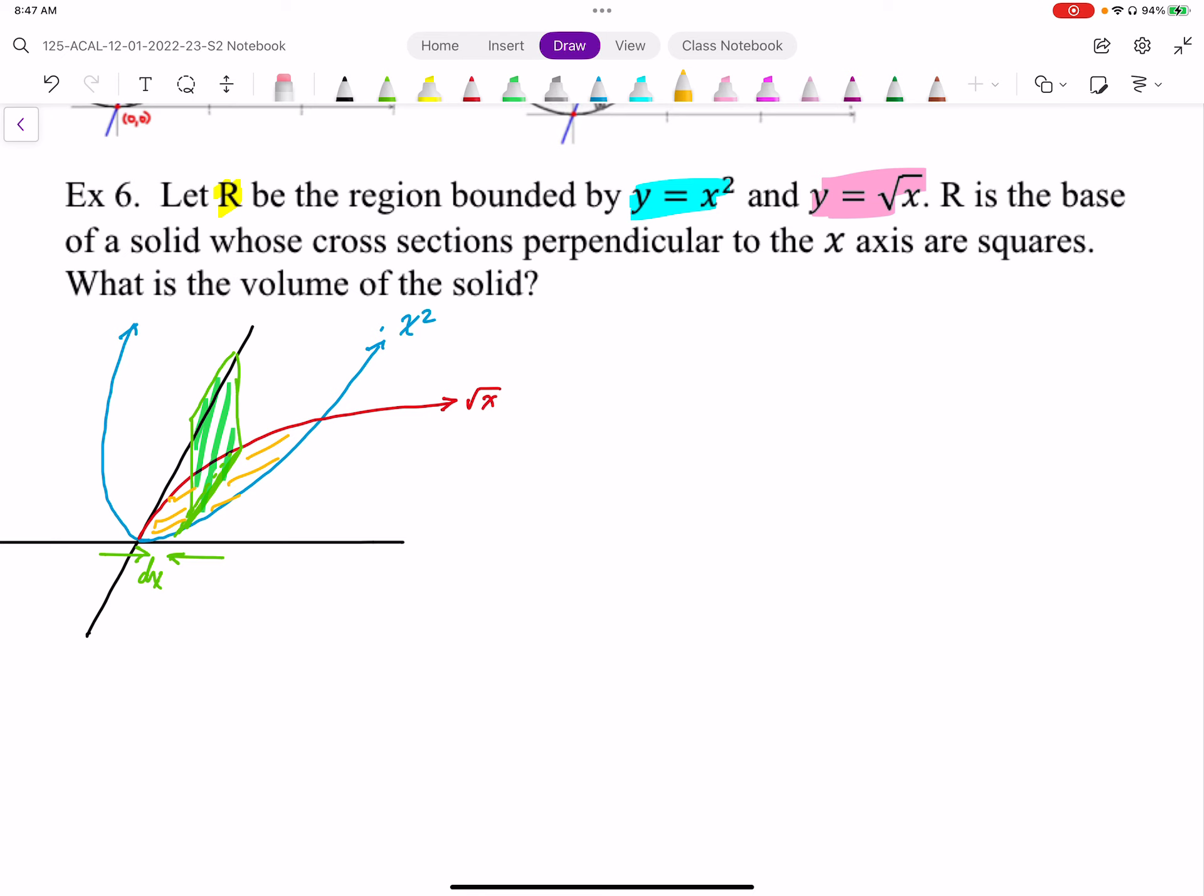R is the base of the solid whose cross-sections perpendicular to x-axis are square. So first of all, let's establish what R is. R is that yellow area between the red curve and the blue curve.